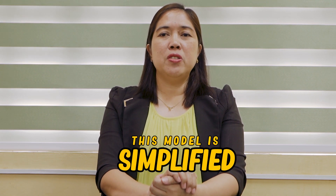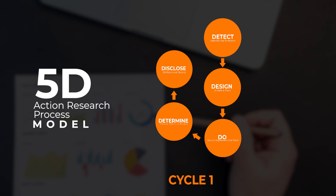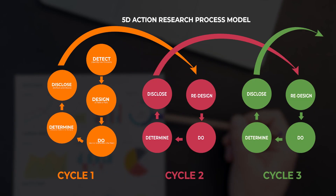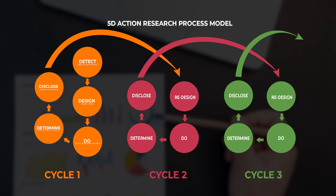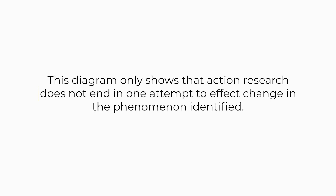This model is simplified to guide you in every step of an action research process. Illustrated here is the cyclical and spiral nature of action research as an approach to solving a classroom issue or problem. However, it does not always follow that one problem needs to undergo three cycles as illustrated. This diagram only shows that action research does not end in one attempt to effect change in the phenomenon identified. This greatly depends on the objective of the study and the progress of the action research process. When the desired change or result is attained, that's the time that the cycle stops. Then the practitioner may look for another problem to be addressed in another set of cyclical steps.